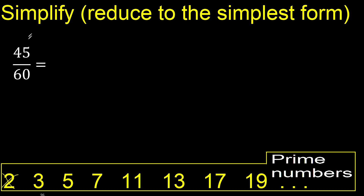Divided by 3: yes, 45 can be divided by 3, because the sum 4 plus 5 is 9, and 9 can be divided by 3. Therefore 45 divided by 3 gives 15. 15 divided by 3 is 5.